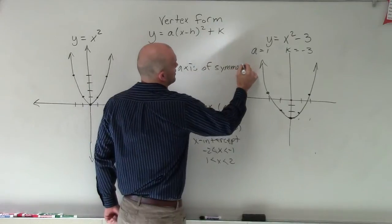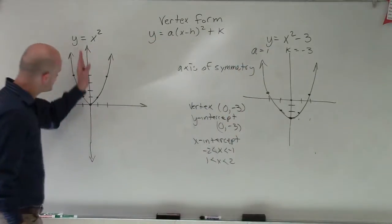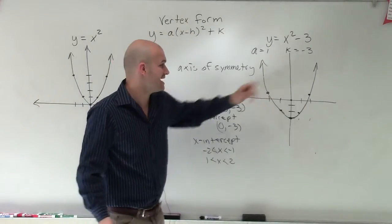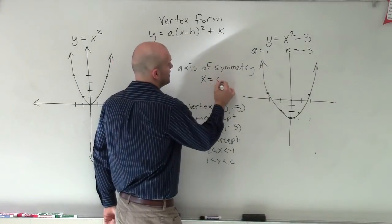Now, since we know over here, my axis of symmetry is at 0. Well, this graph, I didn't shift it anywhere left to right. So the axis of symmetry is still going to be at 0.